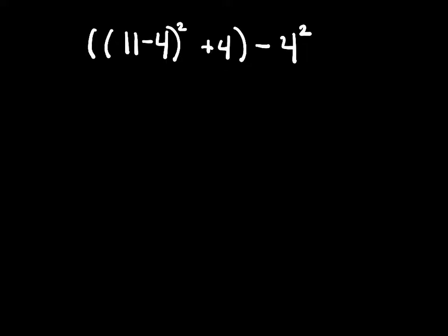We're going to do the parentheses first. So we have a set of parentheses here with an 11 minus 4 in it. 11 minus 4 is 7. And then that is raised to the 2 power plus 4, parentheses, minus 4 squared.